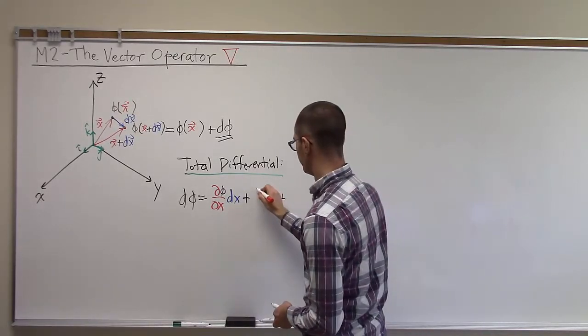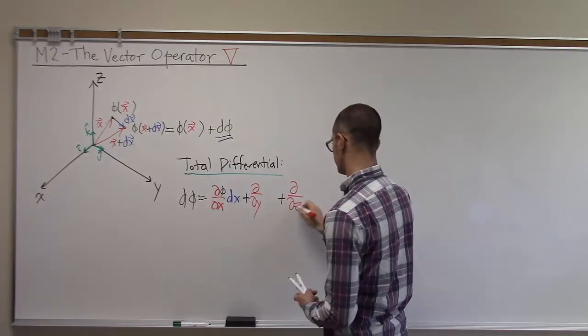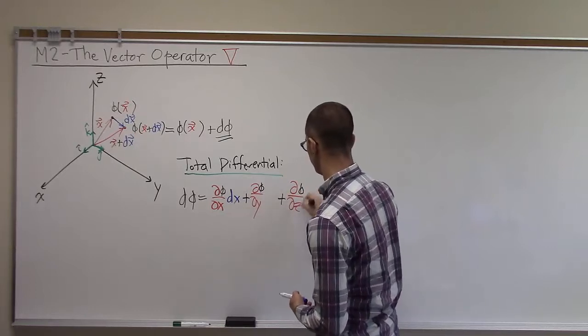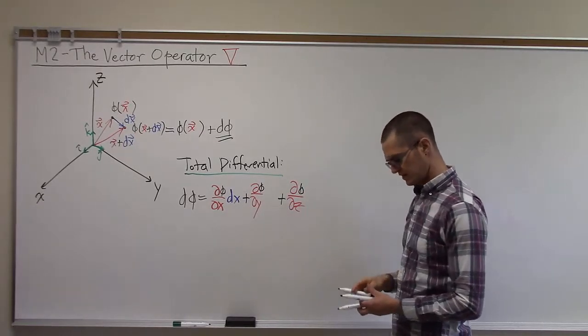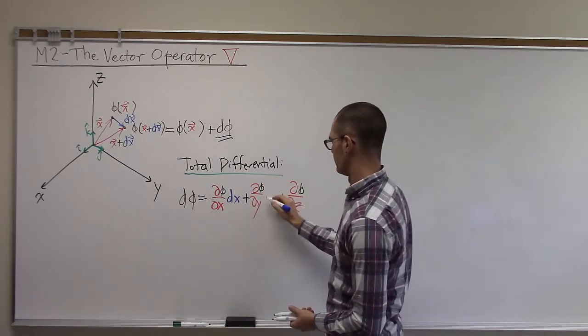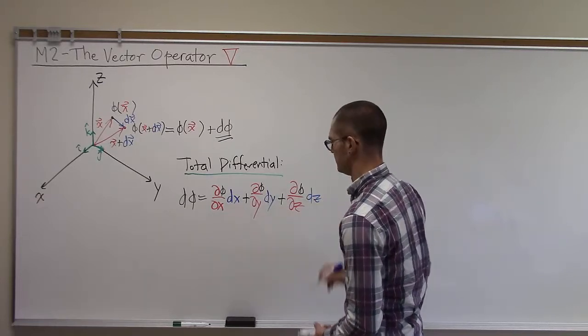So we're going to have a d by dy term, a d by dz term. We're taking the partial derivatives of phi with respect to each of the variables that it depends on, so the coordinate variables. So we're going to have d phi by dy times dy and d phi by dz times dz.